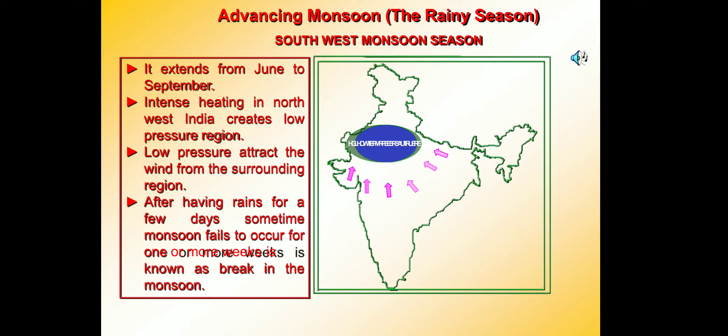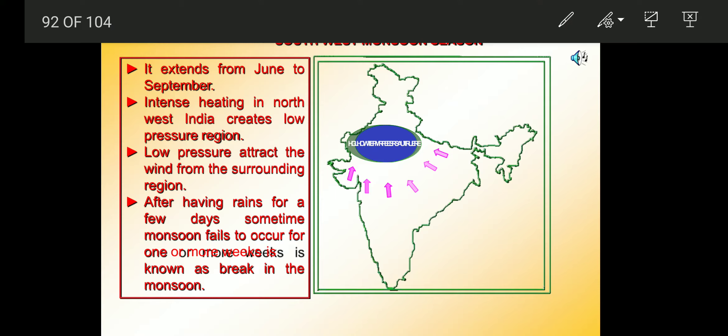By early June, a low pressure condition is created in the northern plains of India. Due to the ITCZ, this low pressure condition is created in the Gangetic plain region, and when it intensifies, it attracts the trade winds.